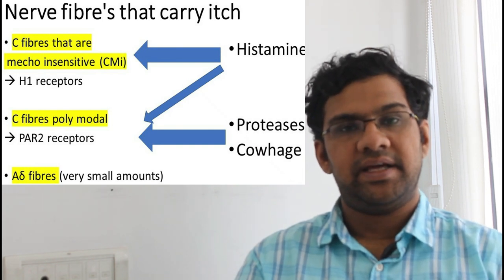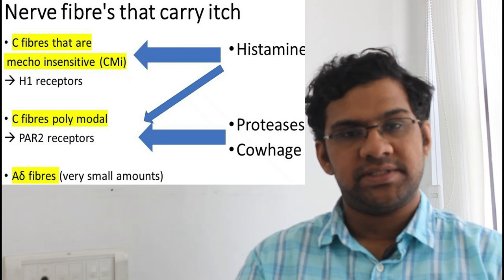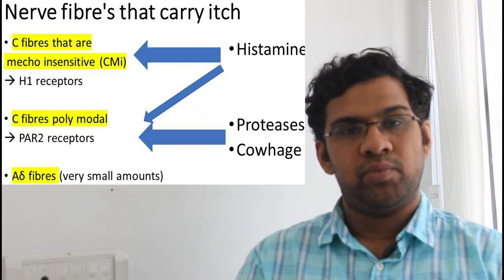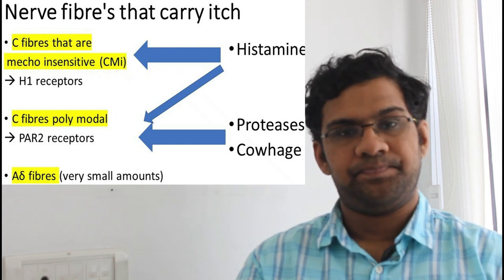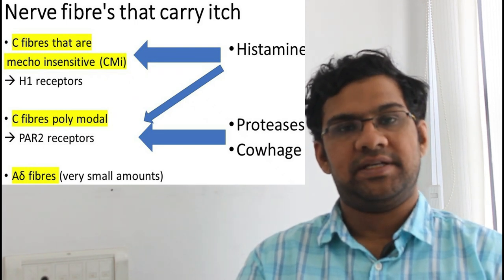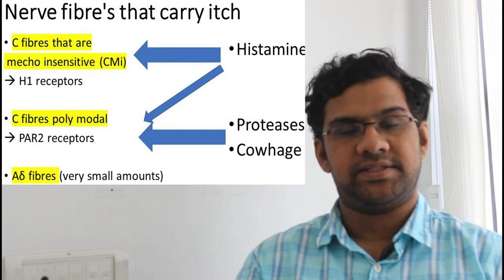Whereas polymodal C fibers transmit both histaminergic and non-histamine itch sensation through PAR2 receptors which are present on their nerve endings. Other polymodal C fibers transmit poorly localized pain.